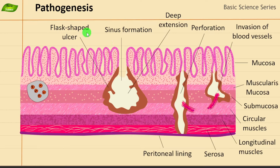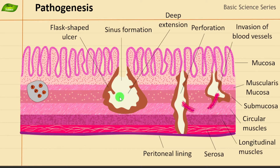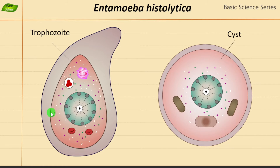The damages include the flask-shaped ulcer, perforation, and different components of the intestinal wall. Let's get started — we'll design all those things as we build our illustrations. Before that, I'm going to explain a few things.